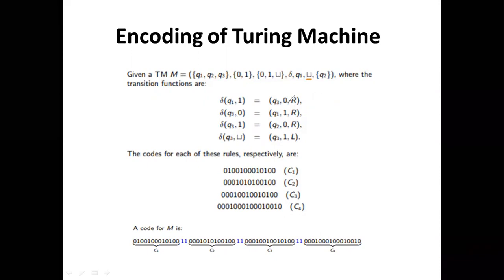The transition functions are: delta(q1, 1) = (q3, 0, Right); delta(q3, 0) = (q1, 1, Right); delta(q3, 1) = (q2, 0, Right); and delta(q3, blank) = (q3, 1, Left).